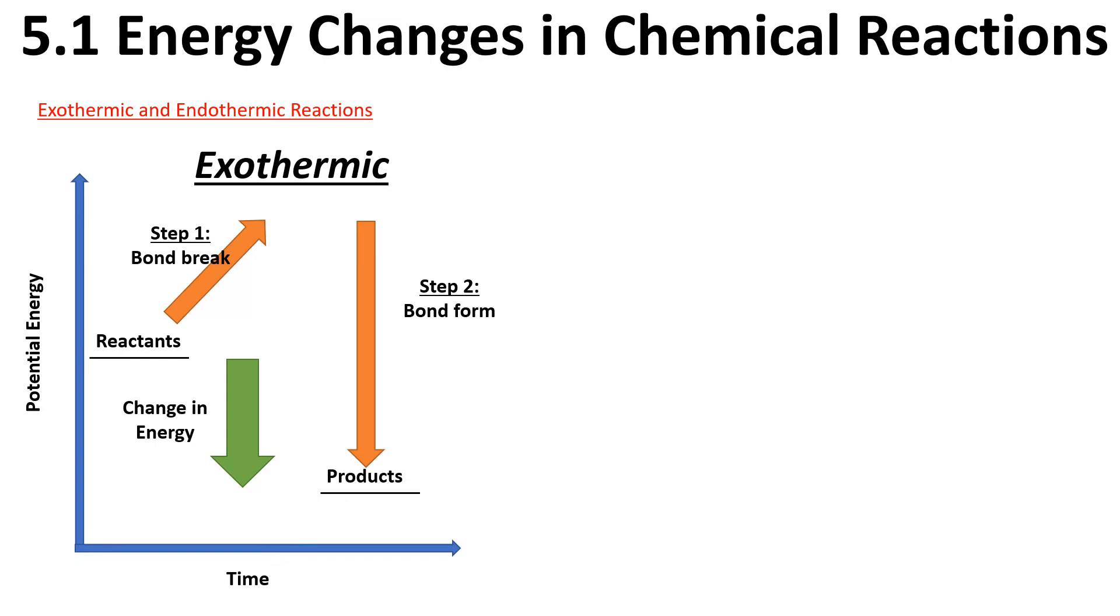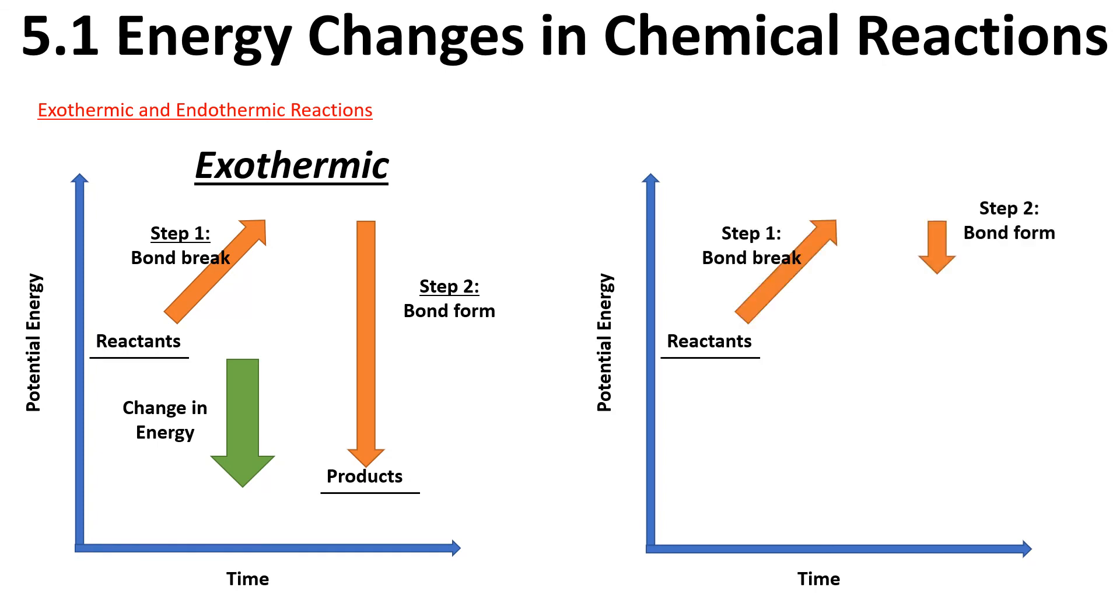We're talking about endothermic here. Same setup, same reactants, same energy broken, but this time the energy required to form our new bonds is much less. Our products actually now have more energy. What's happened here is that our reaction has gotten cold. We've actually taken energy from the surroundings and put it into the system, and that's why our products have more energy than our reactants.